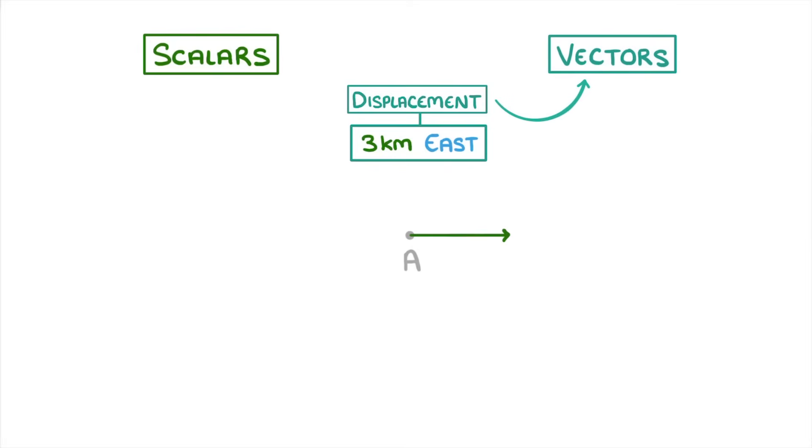In order to represent vectors, we use arrows, with the length of the arrow indicating the magnitude of the vector, and which way it's pointing indicating the direction.